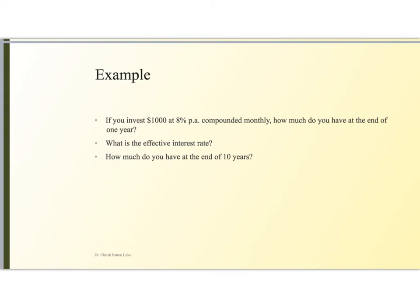So let's look at another example here. This time we're going to be investing $1,000 at 8% per annum, but we're compounding monthly. And we want to know how much we have at the end of a year. We want to know what's the effective interest rate. And we want to know how much we would have at the end of 10 years. So let's just translate this problem into symbols. So I have starting value of P is $1,000. My nominal interest rate is 0.08. M is 12 because I'm doing this monthly.